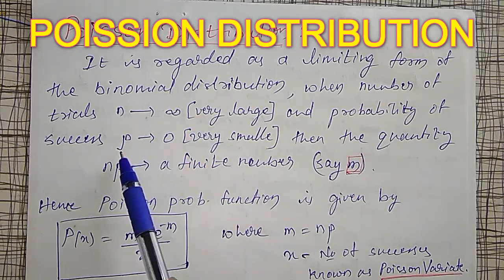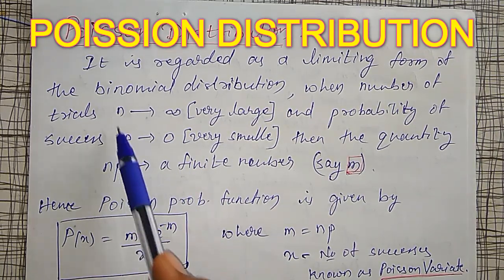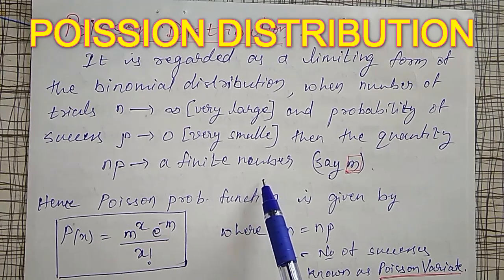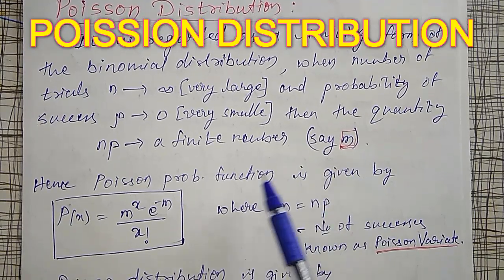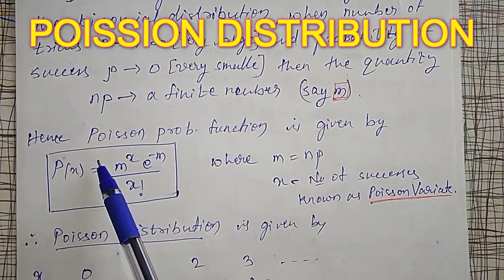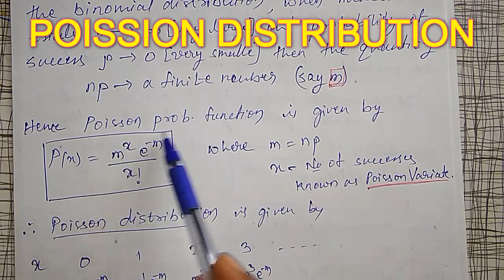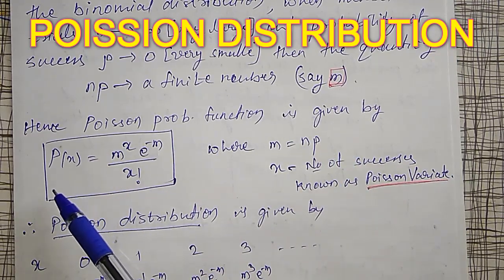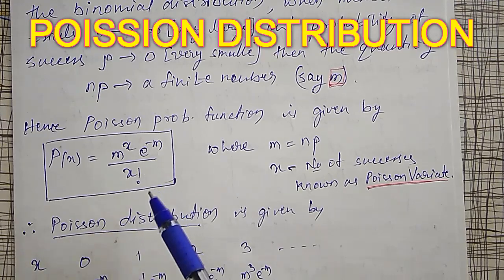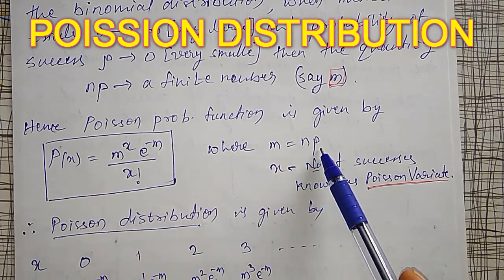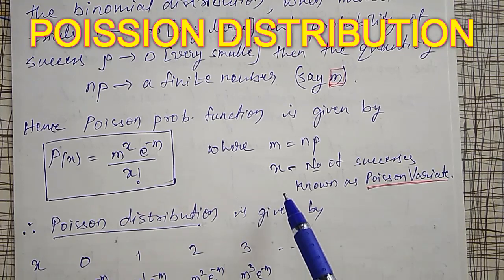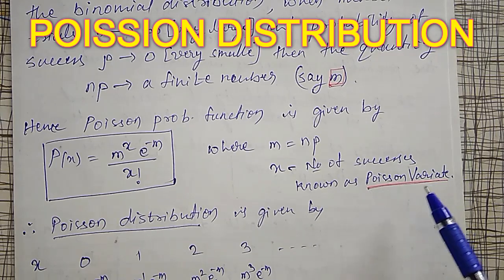As n tends to infinity and p tends to zero, the product np tends to a finite number. We call that number m. Using this m, I define the probability function for Poisson distribution: P(x) = m raised to x, times e raised to minus m, divided by x factorial. Here m equals n times p, the number of trials times the probability of success, and x is the number of successes, known as Poisson's Variate.